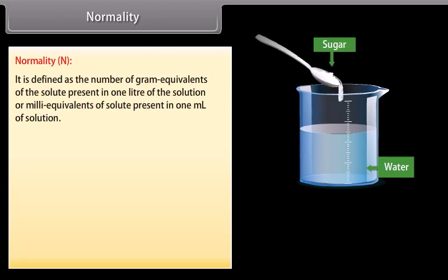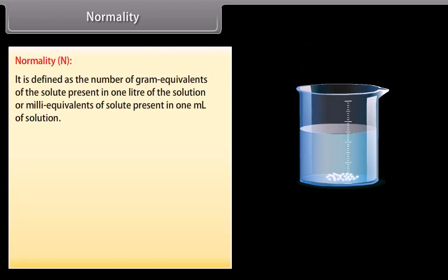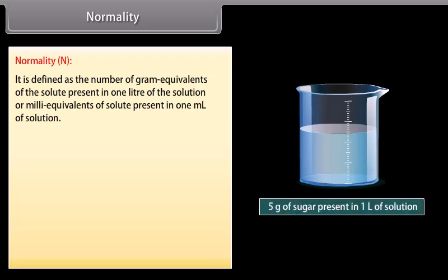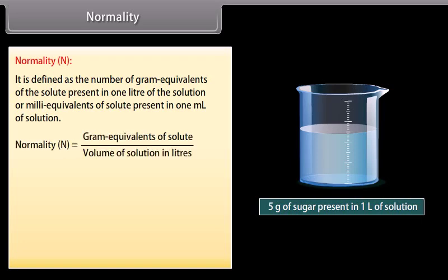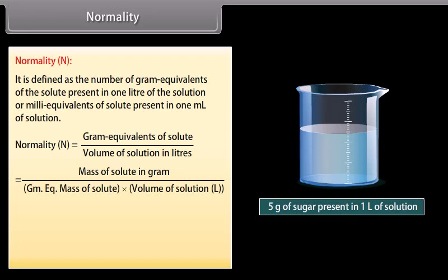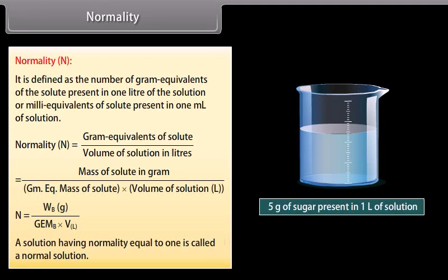Normality is defined as the number of gram equivalents of the solute present in one liter of the solution, or milliequivalents of solute present in one milliliter of solution. It is represented by N. Mathematically, normality N = W_B (in grams) / (gram equivalent mass of B × volume of solution in liters). A solution having normality equal to one is called a normal solution.